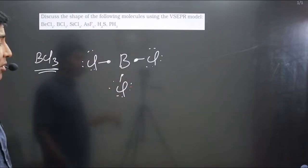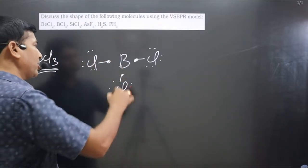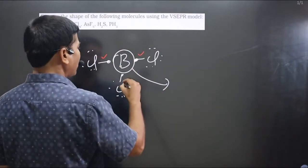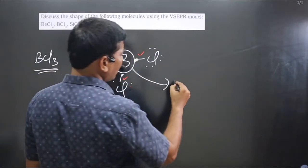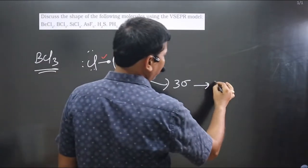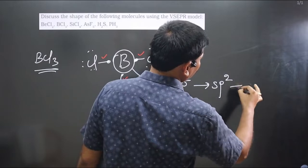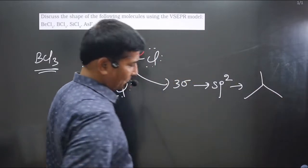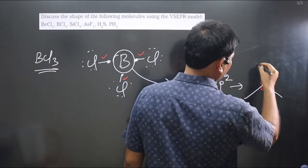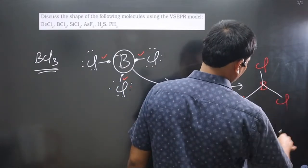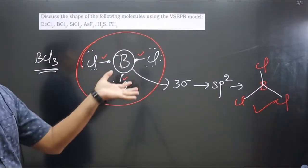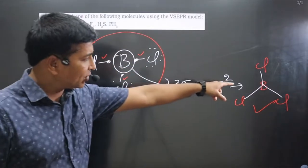The central element boron is forming how many sigma bonds? This is the first sigma bond, the second sigma bond, and the third sigma bond — three sigma bonds. Hybridization will be sp2 and the shape will be trigonal planar. Boron is at the center with three Cl atoms arranged around it in a trigonal planar structure.